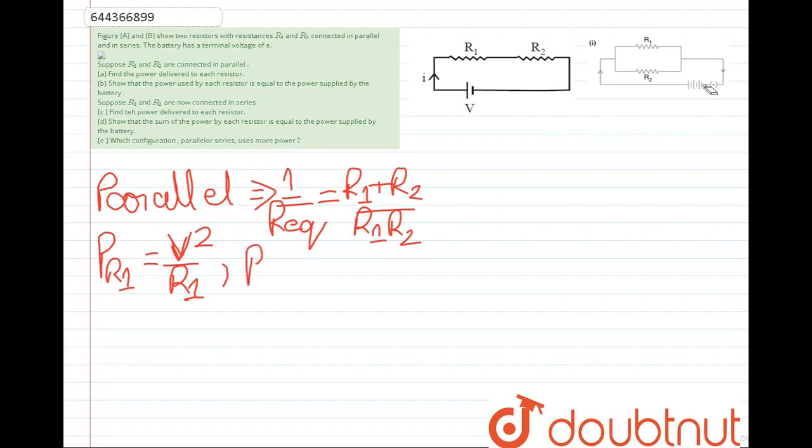Similarly, P of R2 will be V square by R2. Now voltage across battery is the same for both R1 and R2. We have P R1 plus P R2.